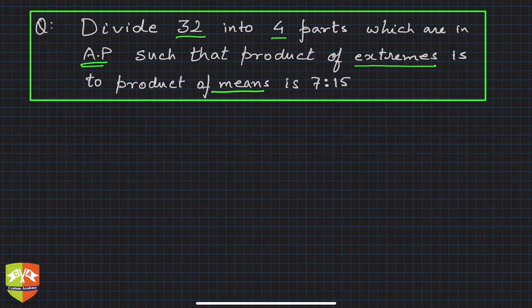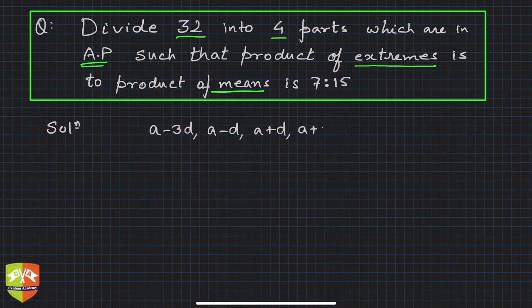Let's solve this problem. Whenever four numbers are in AP, it's always advisable to take them in this form: a minus 3d, a minus d, a plus d, and a plus 3d.